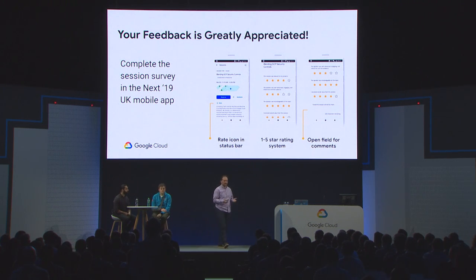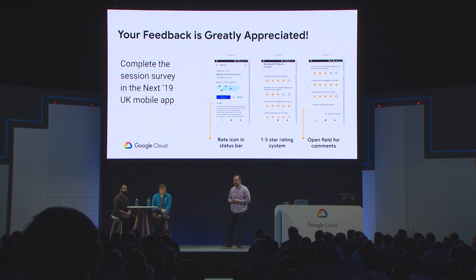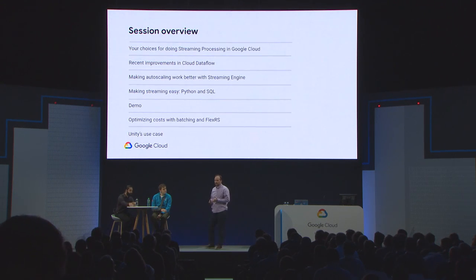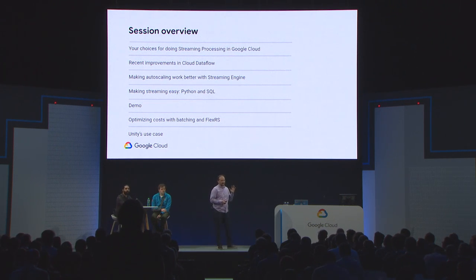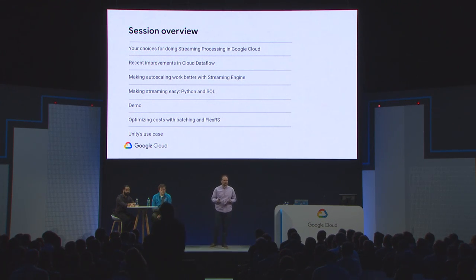Your feedback is greatly appreciated. Please take some time during and after the session to submit feedback. In the session today, we're going to be talking about lots of exciting things: reviewing your options for building streaming processing pipelines in Google Cloud, reviewing recent improvements in Cloud Dataflow and Pub/Sub, diving into features such as autoscaling, Python support, SQL support, and streaming engine. We'll have a demo, review FlexRS, and then have Diego from Unity talk about how Unity is using Dataflow.